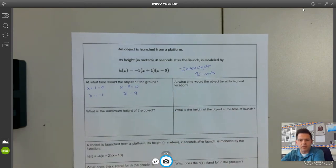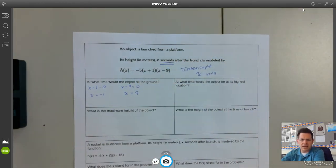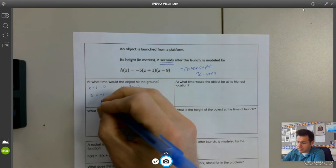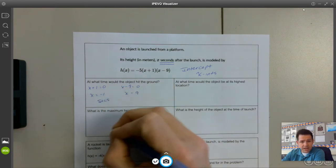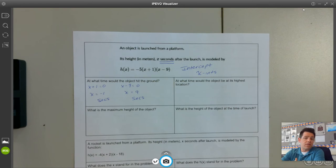It's when we're on ground level or when we make a profit of zero in a bunch of word problems that could pop up. Now here in this problem, X is seconds. So technically we would have an algebraic answer of negative one seconds and an algebraic answer of nine seconds.